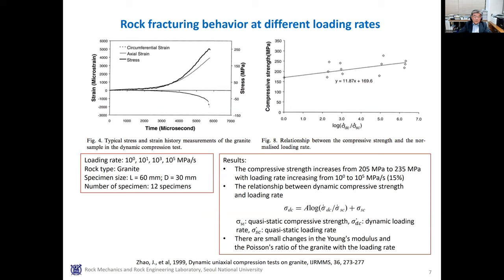The figure on the left-hand side shows the stress-strain curve of rock under compression. The stress and strain increase in a nonlinear pattern before failure at different loading rates — for instance, from 1 to 10 to the fifth megapascal per second. In the figure on the right-hand side, the strength increases in a linear pattern in the log scale of the ratio of dynamic to static loading rate. The increase of strength was about 15% in this case, but Young's modulus and Poisson's ratio did not change much.